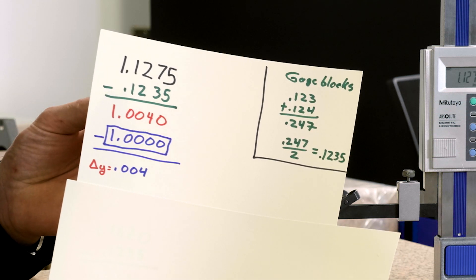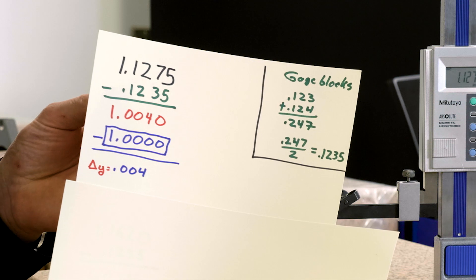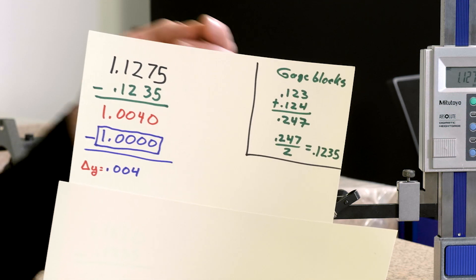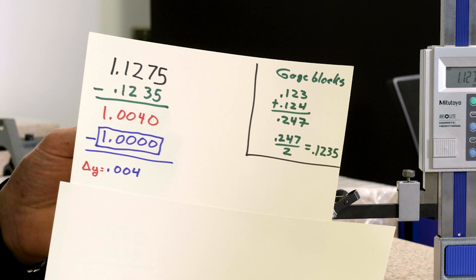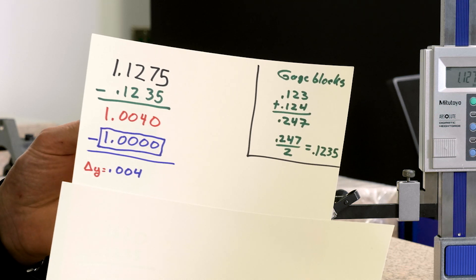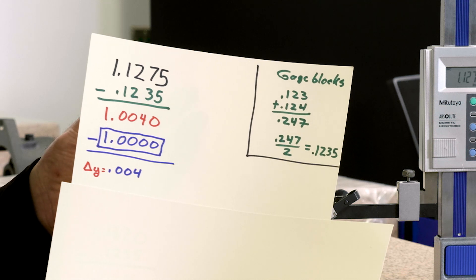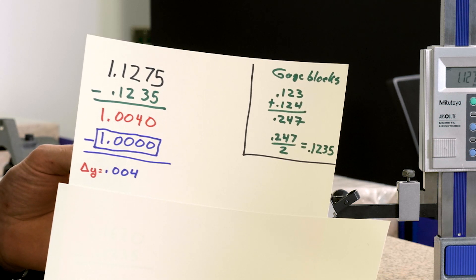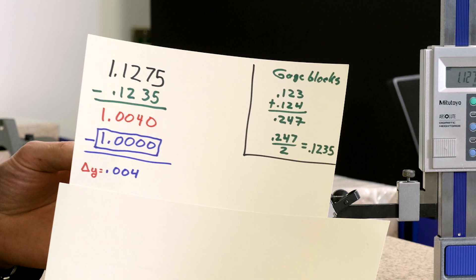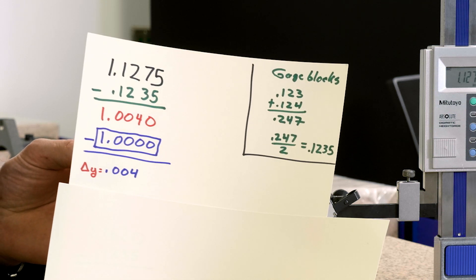Our first calculation will look like this: 1.1275 minus 0.1235, which as you can see over here is half of the height of the gauge blocks. It gives us a distance from our datum simulator of 1.004. We subtract the basic dimension and that gives us the variation of the center plane from the true position of four thousandths.